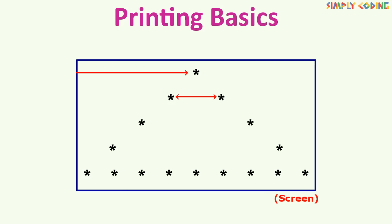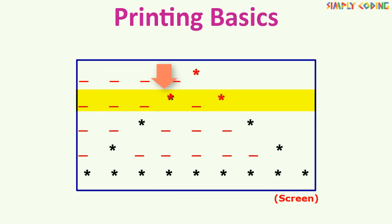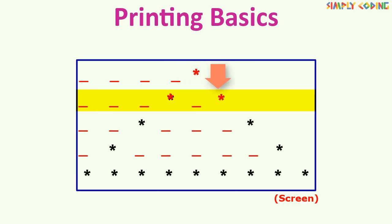This is actually done by printing spaces. So in this line there are some spaces, then one star, then again spaces, and then again one star.